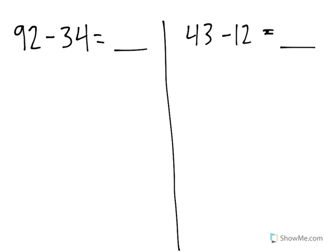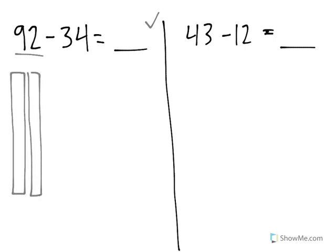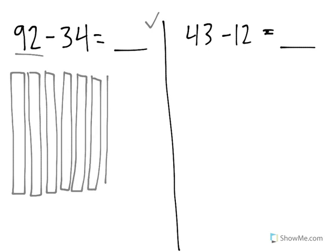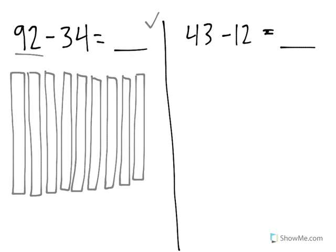Now what I'm going to do is start by drawing. We're going to start with the problem on the left here, and I'm going to represent 92 using tens rods and ones cubes. So the number 92, as you can see, has a 9 in the tens place. That means that I need 9 tens rods. There's 6, 7, 8, and 9. And it has a 2 in the ones place, so that means there are 2 ones.